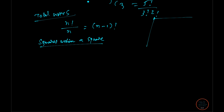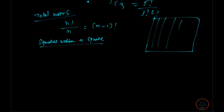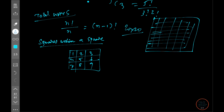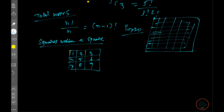I first encountered this question in my Olympiad. They gave a 20×20 board and asked for the total number of squares — very tough. Let me give you a smaller example: a 3×3 board. It has 9 unit squares, plus 1 big square = 10, plus four 2×2 squares, giving a total of 14 squares.